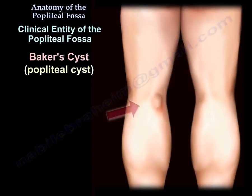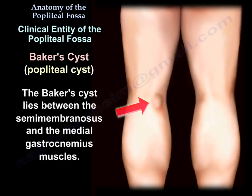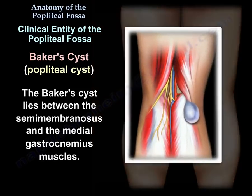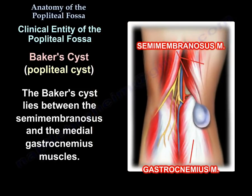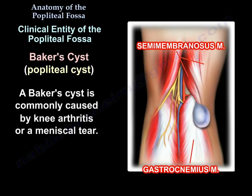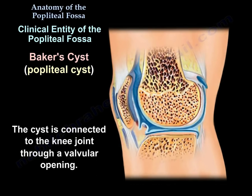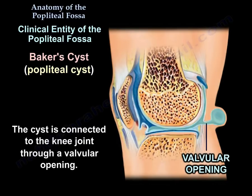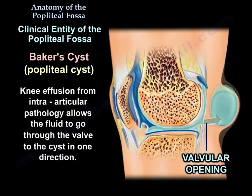Baker's cyst is an interesting clinical entity of the popliteal fossa. It lies between the semimembranosus and the medial gastrocnemius, and is commonly caused by knee arthritis or a meniscal tear. The cyst is connected to the knee joint through a valvular opening, allowing fluid from intra-articular pathology to pass through the valve into the cyst in one direction.